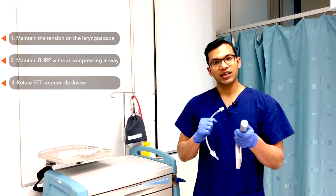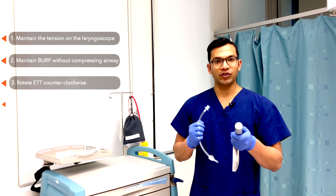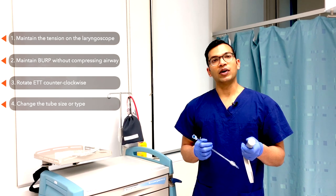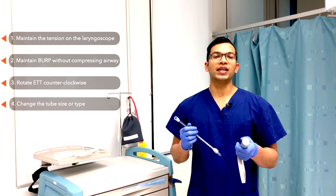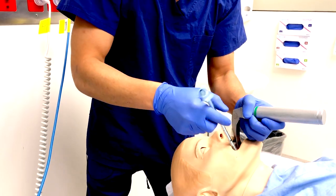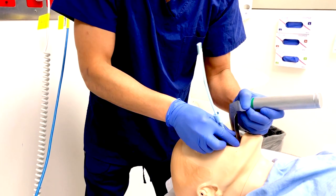Now if none of those steps work, sometimes you just need a smaller tube or a different tube. Never be ashamed if you simply can't get an airway. Putting a size 6 tube in is always going to be easier than putting a size 7 or 8 tube in, and that's always a possible backup you can use.